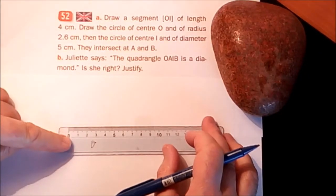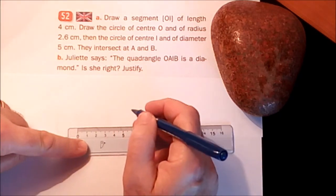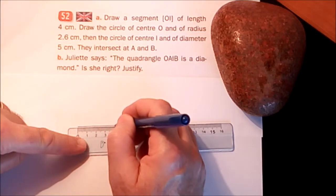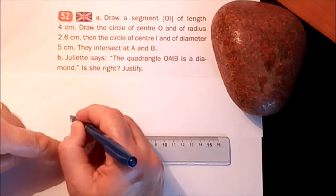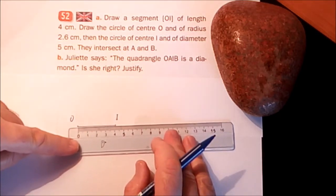Draw a segment OI of length 4 cm. Tracez un segment OI de longueur 4 cm. Bien, à peu près.